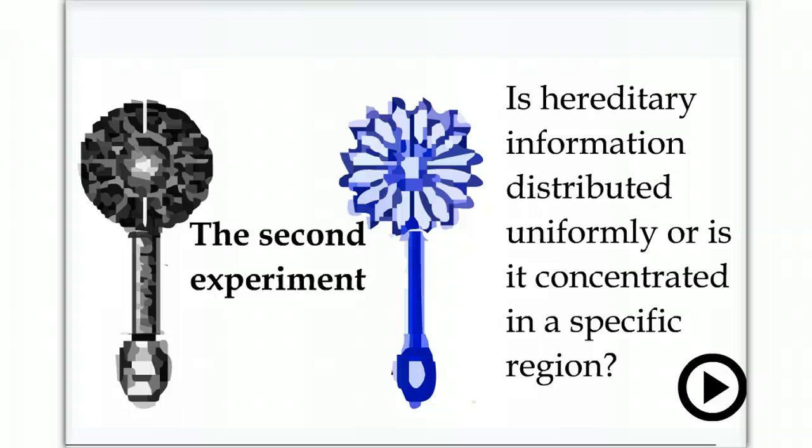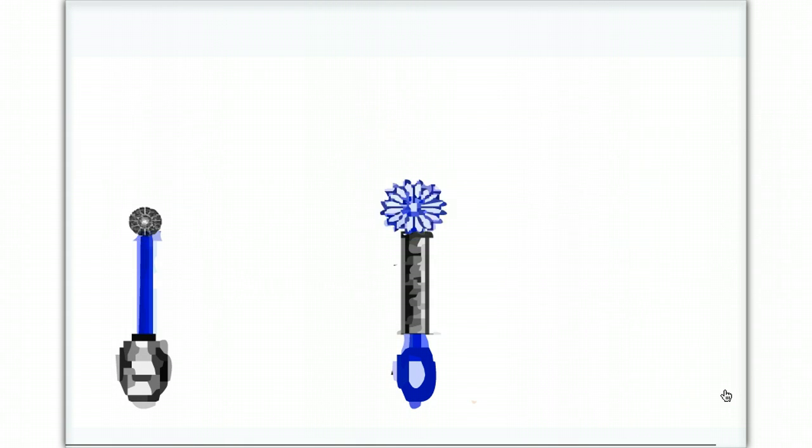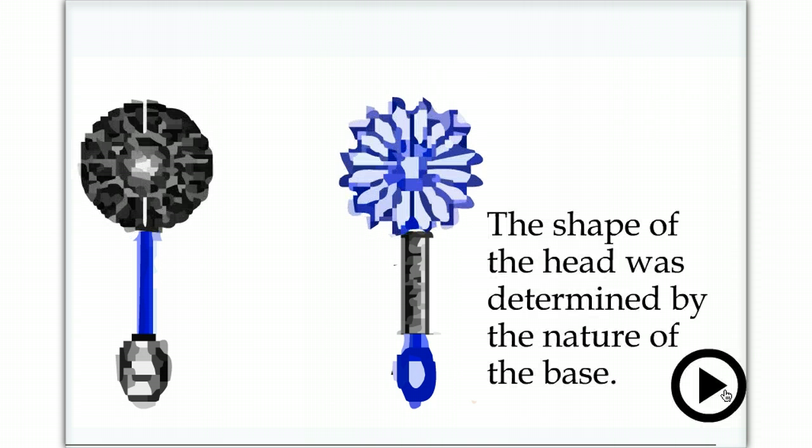To address this question, he transplanted a large part of the stalk of one cell to another. He then let the cell recover. The head shape that grew back was determined by the small region of the cell containing the nucleus, not the much larger transplanted region of the stalk. The head shape was determined by the nature of the base.